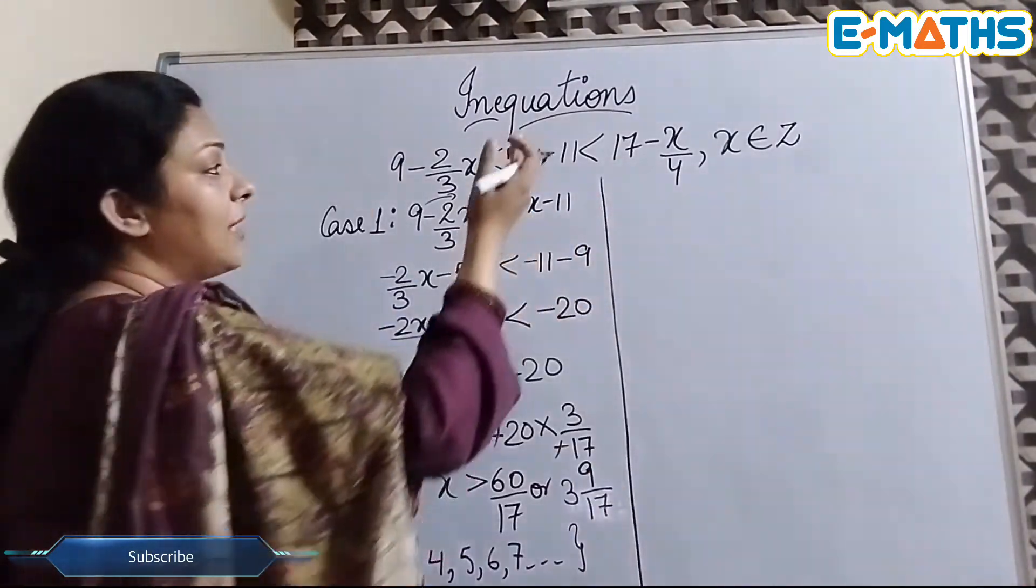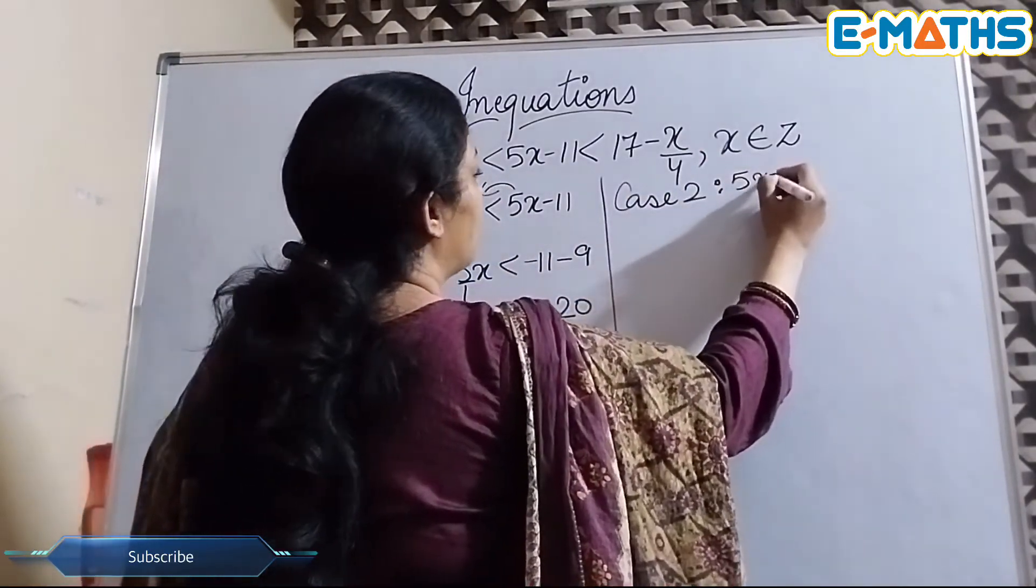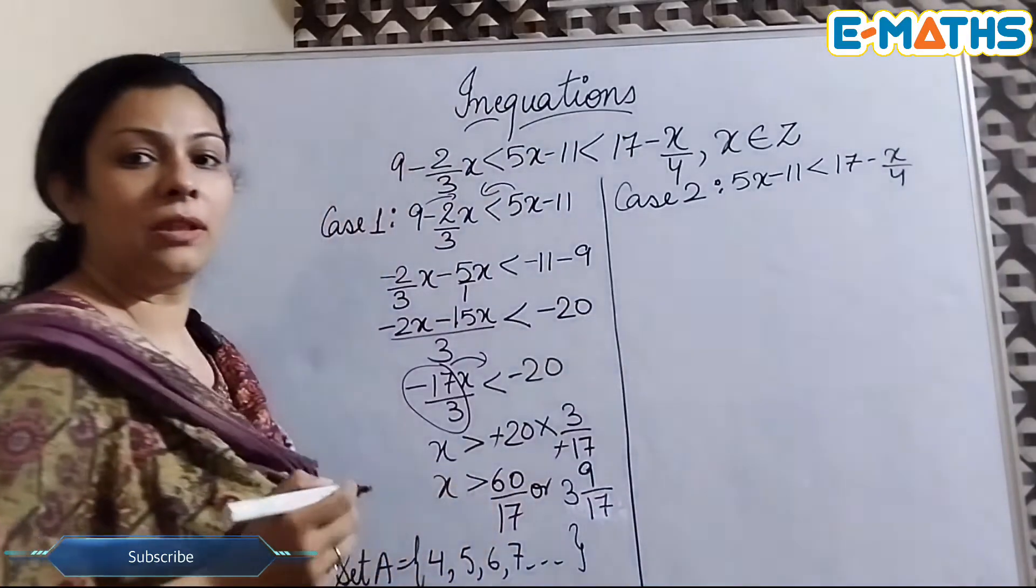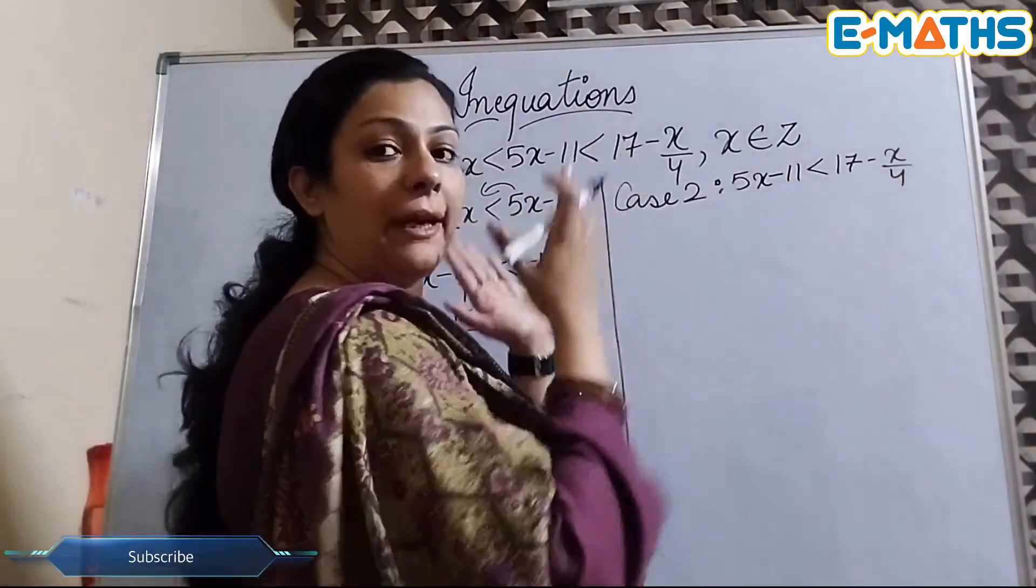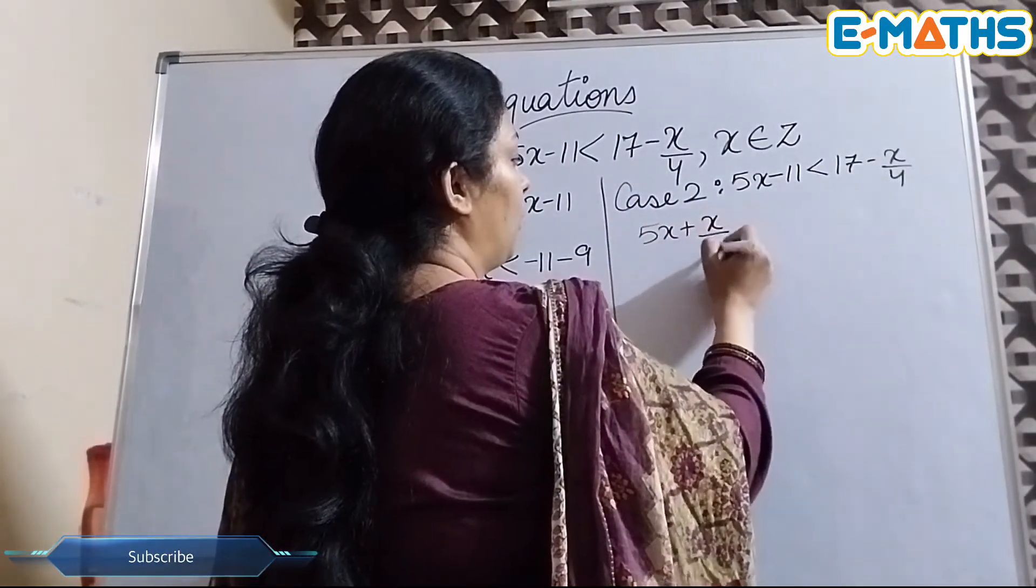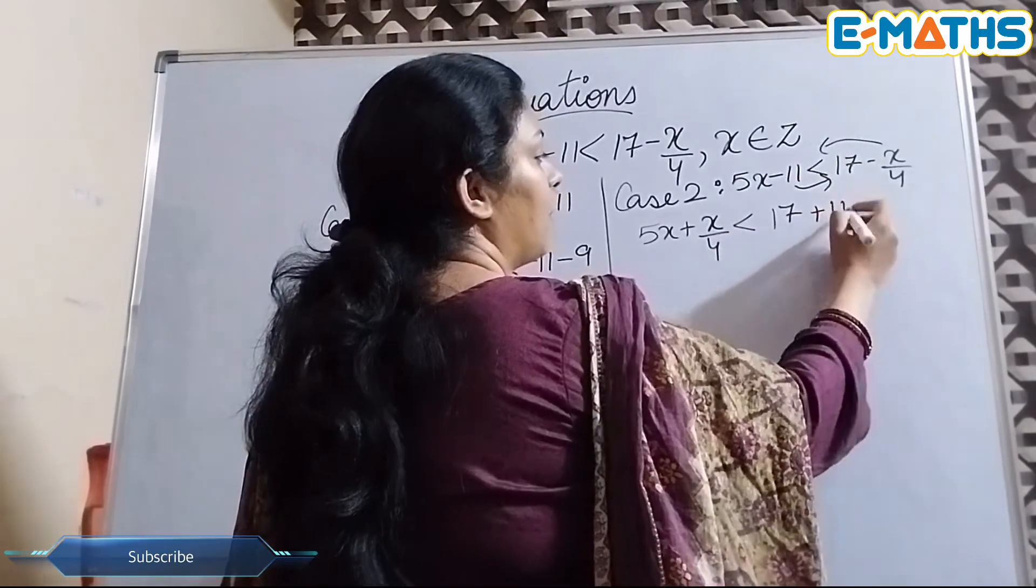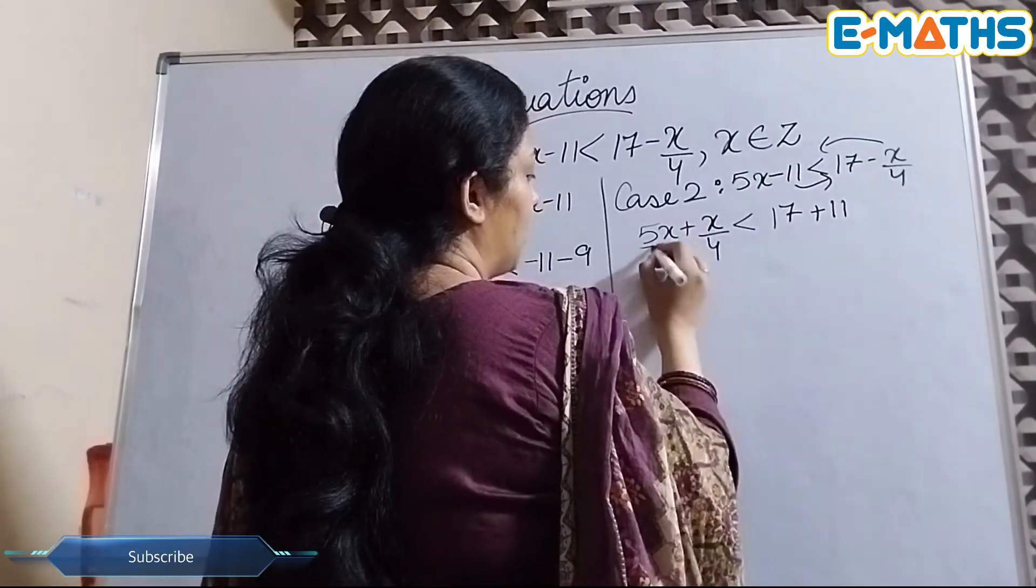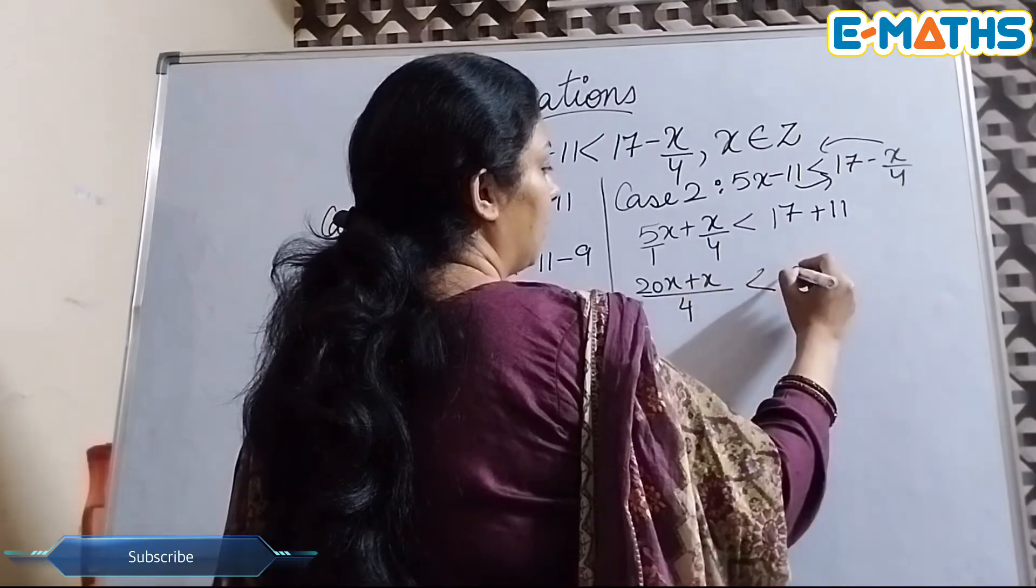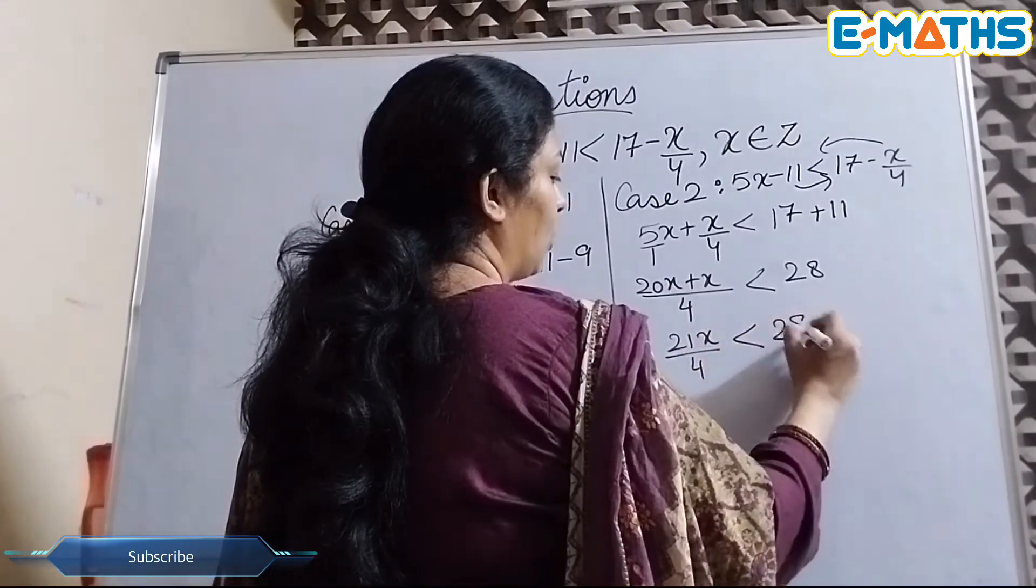Now as I told you, for case 2 we need to take the next two terms: 5x - 11 < 17 - x/4. So this is our question now. Again, keep the x's on one side and constants on one side. So this will be 5x + x/4 because I'm bringing this on this side, smaller than 17 will be there as it is. This 11 will go on this side, this will be 17 + 11. So here it's nothing but 1, 4 will be here. 20x + x smaller than 28. So we have 21x/4 < 28.